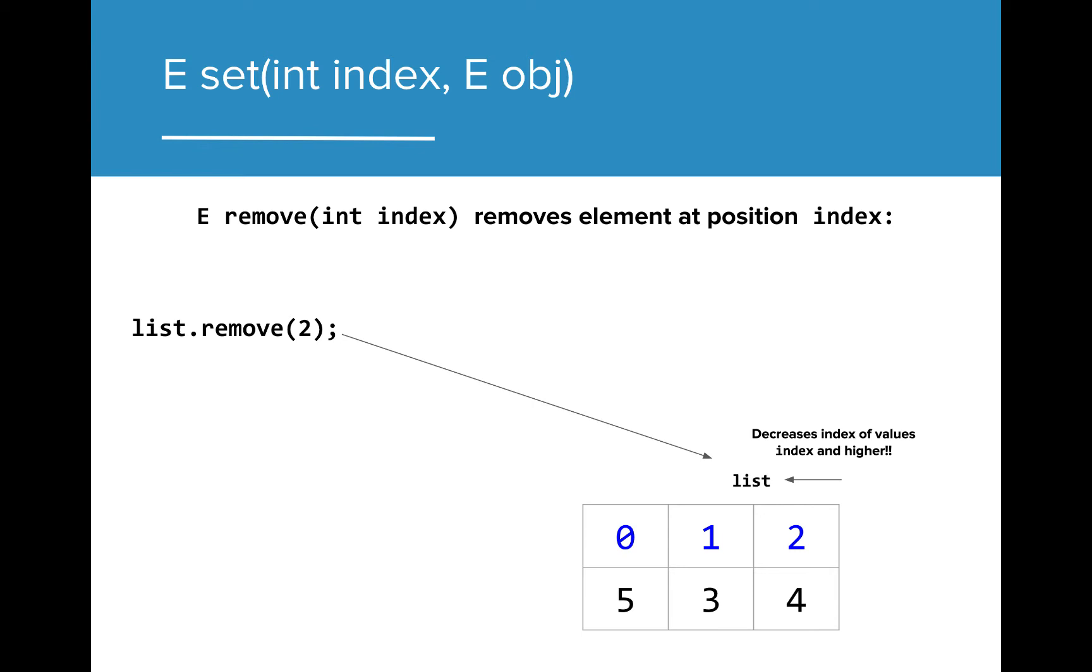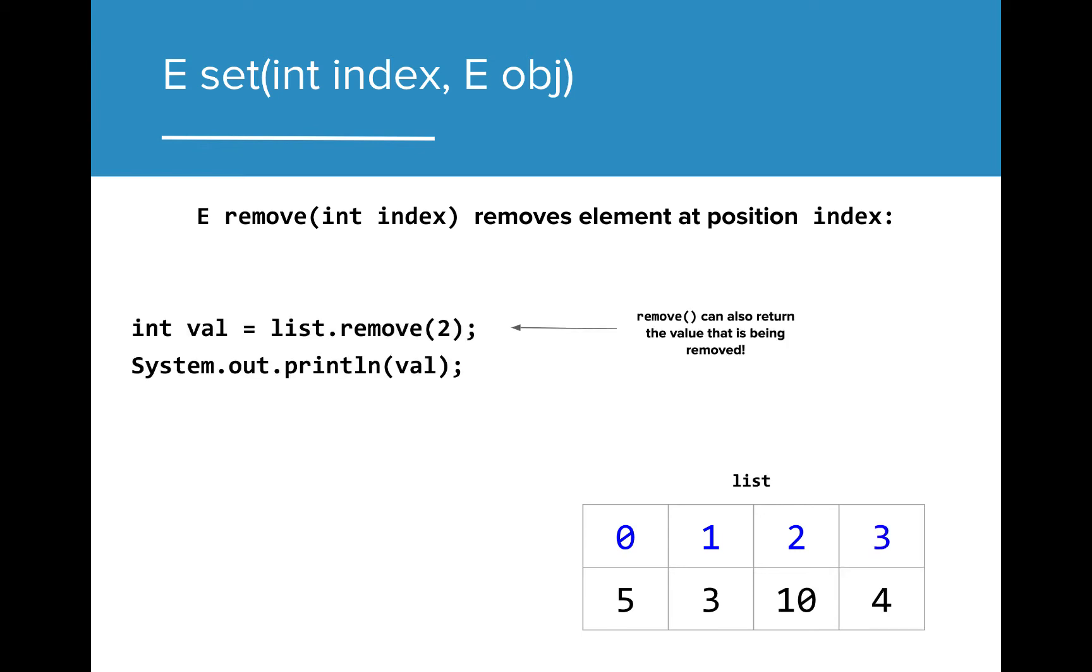Now, the index 2 holds the value 4, which was previously at index 3. Like the set method, the remove method returns the value that is being removed from the ArrayList. If we were to print the variable val after assigning it to list.remove2, the value printed would be 10, the previous element at index 2.